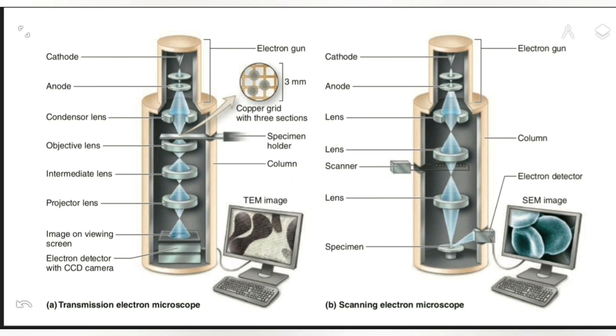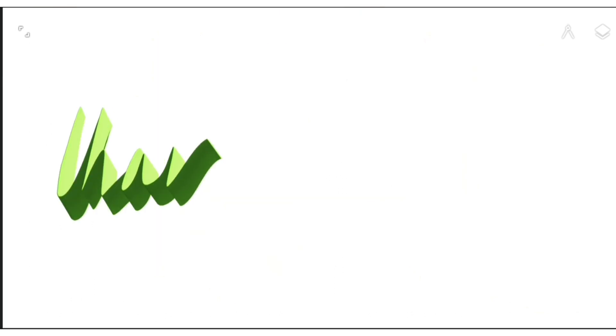You can see the difference. In the left one, the light passes through the tissue and then is detected and taken by the image detector, while in the right one, the scanning electron, it's the reflection that happens and then the detector takes it.